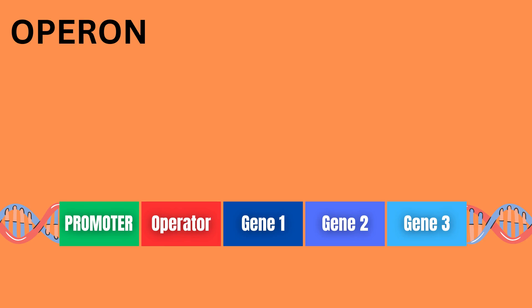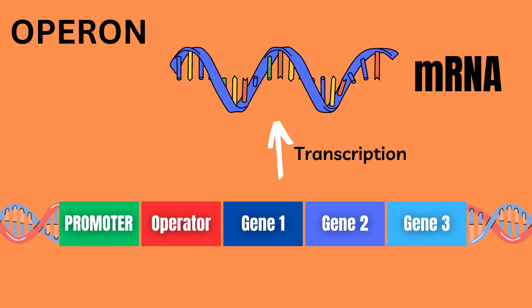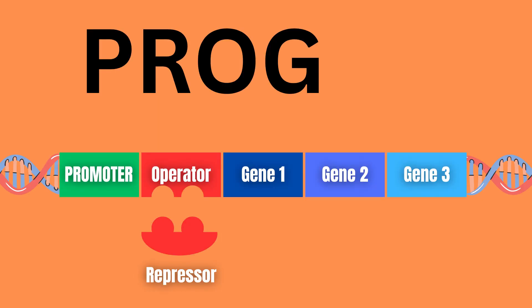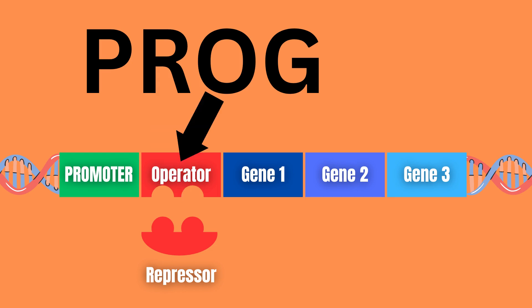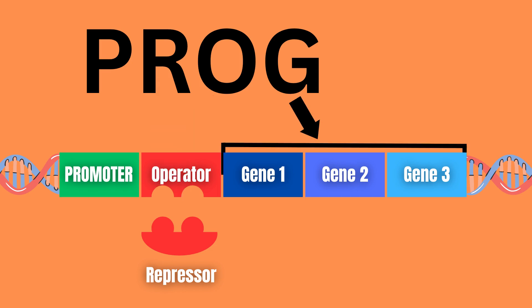An operon is a group of genes that are transcribed as a single mRNA. The structure of an operon can be remembered using the acronym PROG, which stands for promoter, repressor, operator, and the genes.